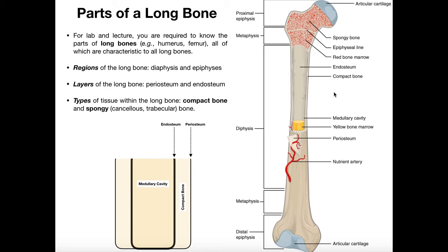The articular cartilage acts as a cushion and shock absorber. If it wears down from overuse, the resulting bone-on-bone situation can cause serious problems — in the case of the hip joint, it might require a hip replacement, or hip arthroplasty. Now let's go and look at some microscope images of cancellous, spongy, and compact bone.